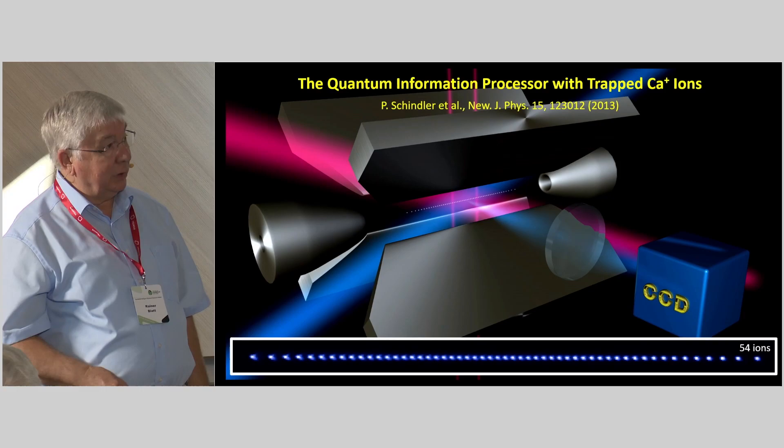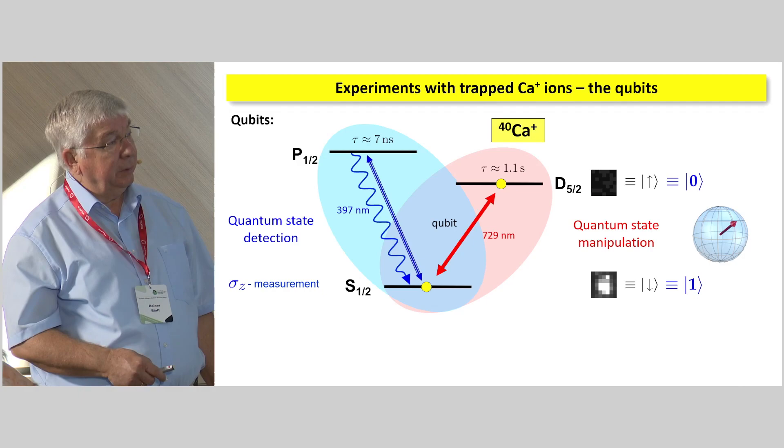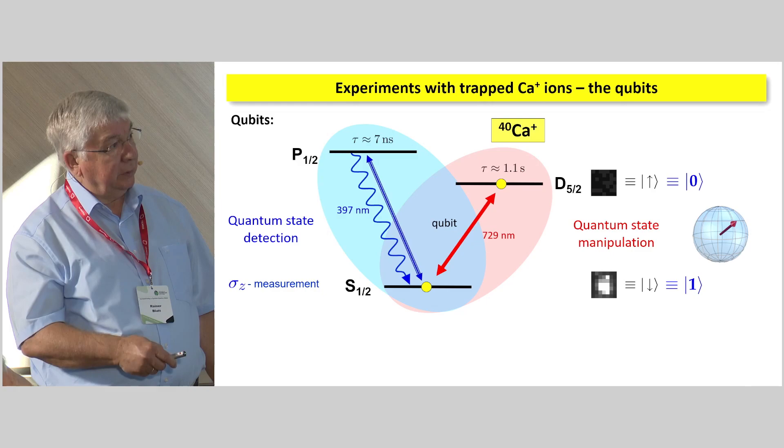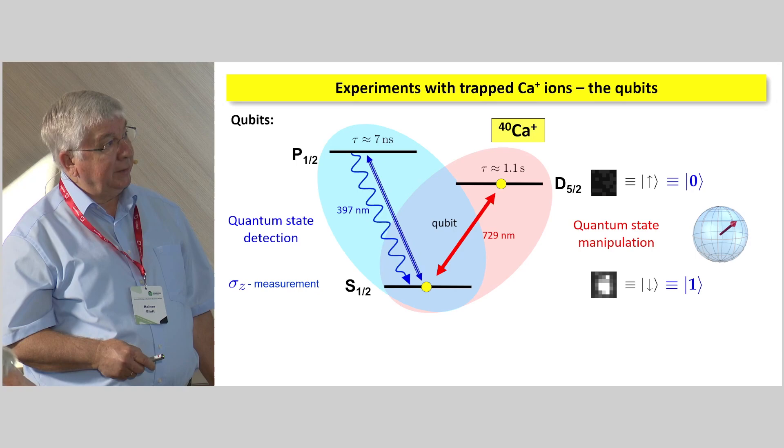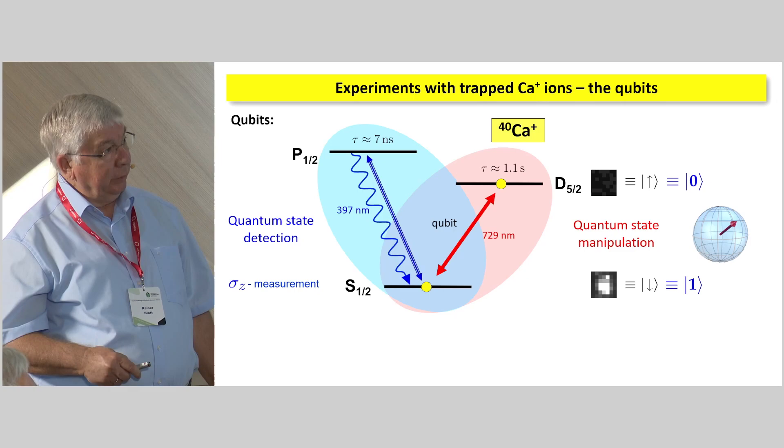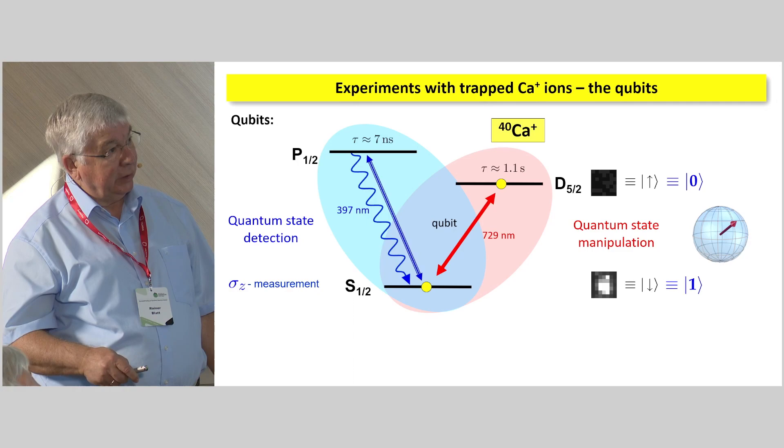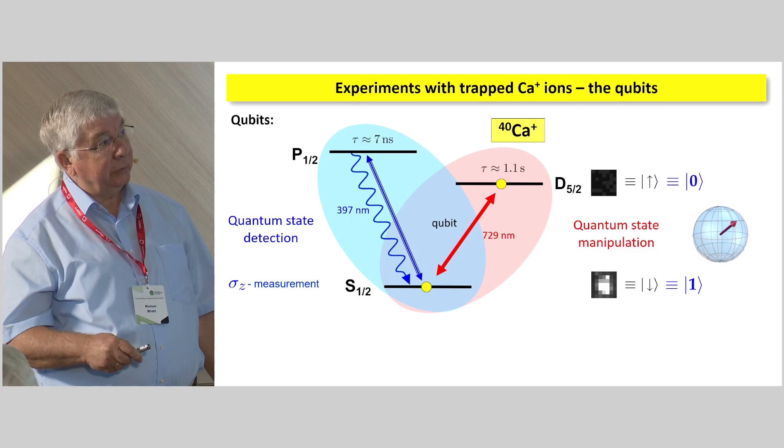Now, the ion is a calcium plus ion. And the qubit that we are using is just implemented here on this metastable state, the ground state, connecting this transition at 729 nanometers. We can detect it readily by shining in some light on the dipole-allowed transition right here. In other words, when the system is in the ground state, then it just scatters light on this transition. So that's what we call the spin-down or the logical one state. Or if it's up there projected at the d5 half state, it doesn't scatter light, so it's a logical zero or spin-up state.